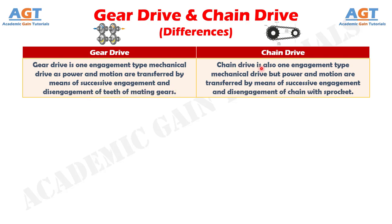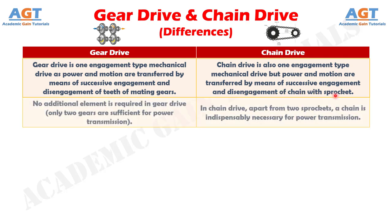Whereas, chain drive is also an engagement type mechanical drive, but power and motion are transferred by means of successive engagement and disengagement of the chain with the sprocket. Difference number 2: No additional element is required in gear drive — only two gears are sufficient for power transmission. Whereas, in chain drive, apart from two sprockets, a chain is indispensably necessary for power transmission.